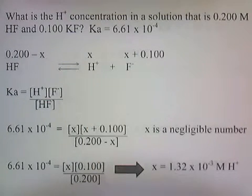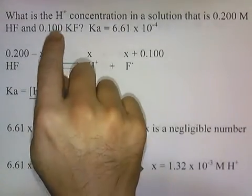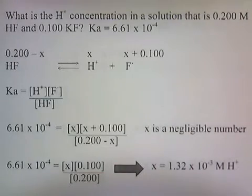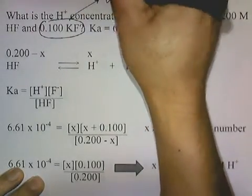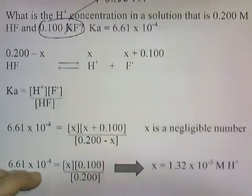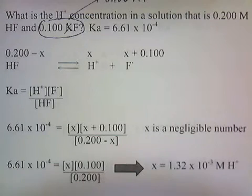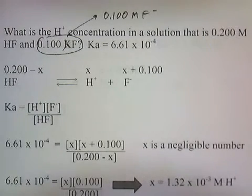We start out by saying that the K in KF can be ignored. We assume that 0.1 molar KF means 0.1 molar fluoride has been added. So this is the equivalent of adding 0.100 molar of F-. We ignore the K part. We're going to solve this problem like a regular Ka problem, but we just need to make sure that the 0.1 molar fluoride, we need to include that as part of the concentration of the total fluoride.